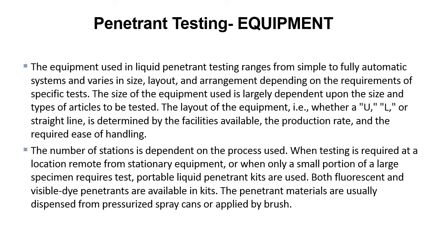The equipment used in liquid penetrant testing ranges from simple to fully automatic systems and varies in size, layout, and arrangement depending on the requirements of the specific tests. The size of the equipment used is largely dependent on the size and types of articles to be tested. The layout — whether it's in a U, an L, or a straight line — is determined by the facilities available, the production rate, and the required ease of handling. When testing is required at a location remote from stationary equipment, or when only a small portion of a large specimen requires tests, portable liquid penetrant kits are used. Both fluorescent and visible dye penetrants are available in kits. The penetrant materials are usually dispensed from pressurized spray cans or applied by brush.